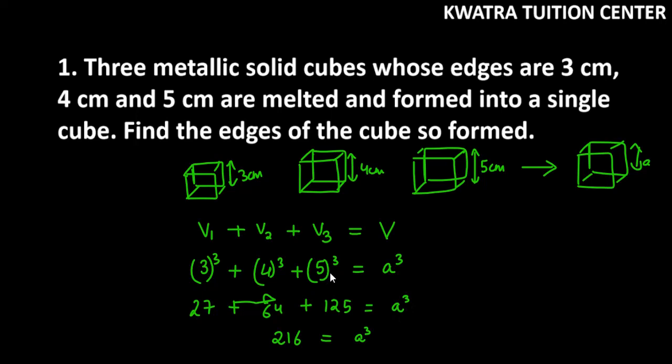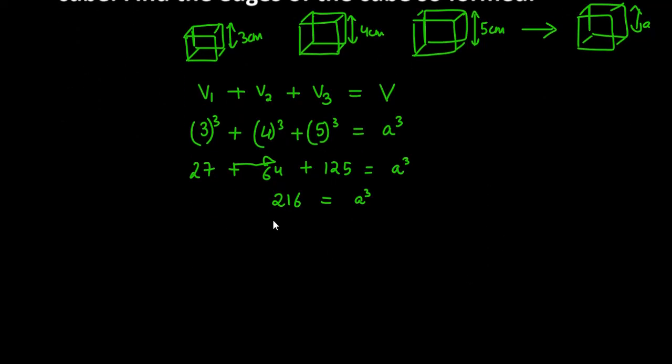Now you need to find the cube root of 216, and cube root of 216 is 6 only. So we get the value of a cube as 6 cube. Now you can cancel cube with cube. So the final answer will be a as 6 centimeter.